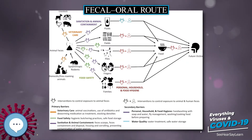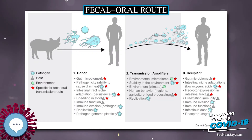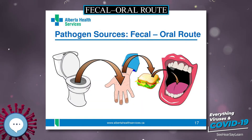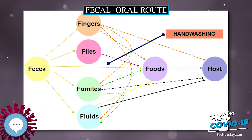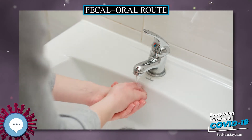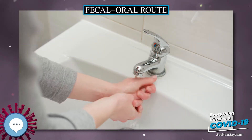If soil or water bodies are polluted with fecal material, humans can be infected with waterborne diseases or soil-transmitted diseases. Fecal contamination of food is another form of fecal-oral transmission. Washing hands properly after changing a baby's diaper or after performing anal hygiene can prevent foodborne illness from spreading.